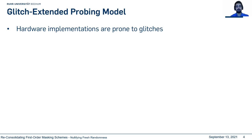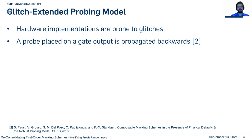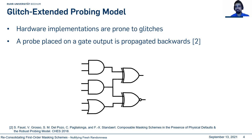Glitches are unwanted transients at the output of a combinatorial circuit, mainly due to unbalanced paths at the input. In this model, when a probe is placed on a gate, it propagates backward up to the last synchronization point. Here is a simple logic circuit — if you probe one of the outputs, the probe propagates backward and the adversary has information about all four input bits involved in the calculation.